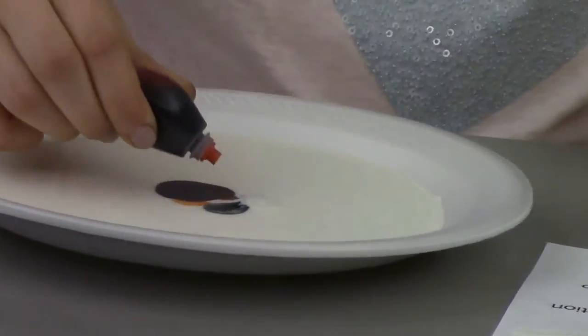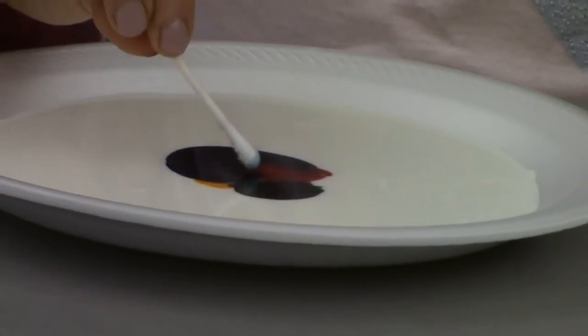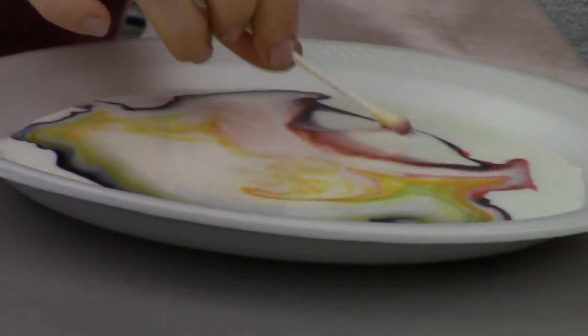You're going to put the dish soap on the cotton swab. Then you're going to put it right in the center and watch the magic happen. And there you have it, tie-dyed milk.